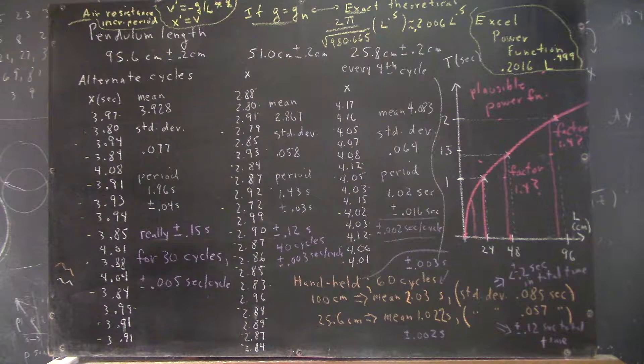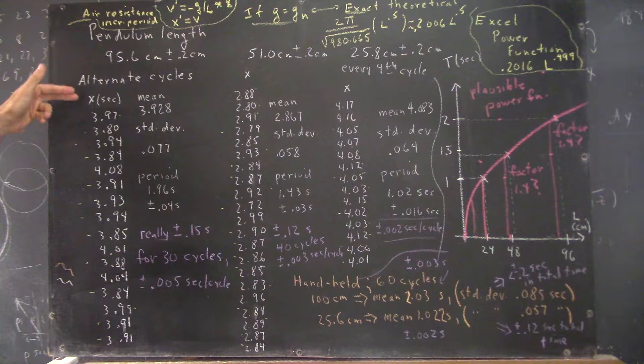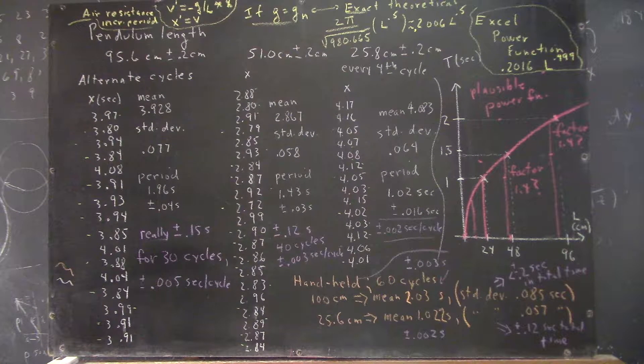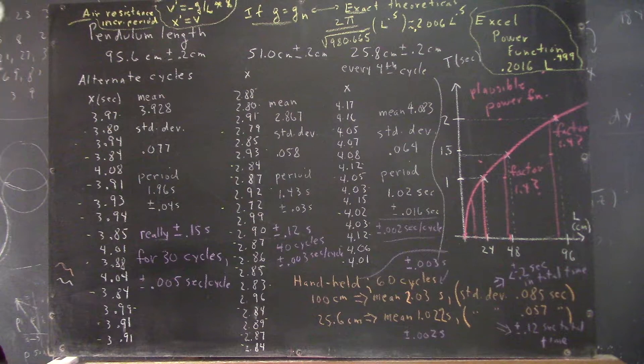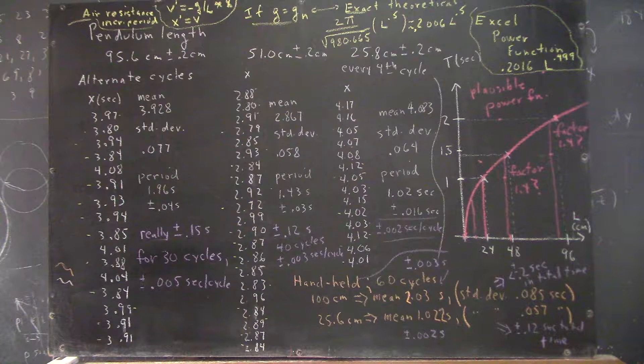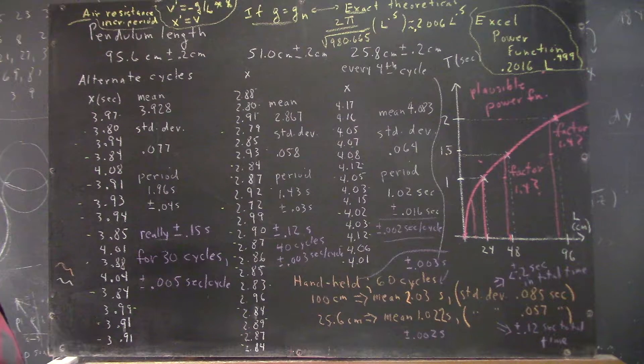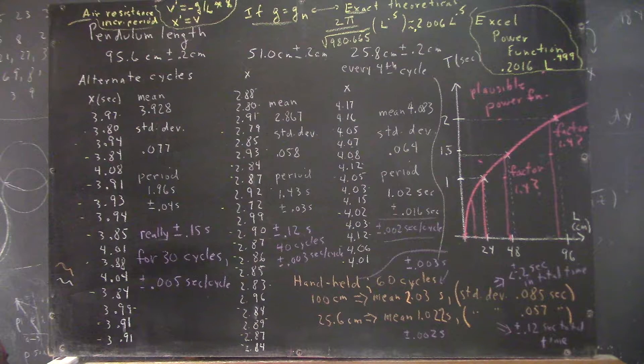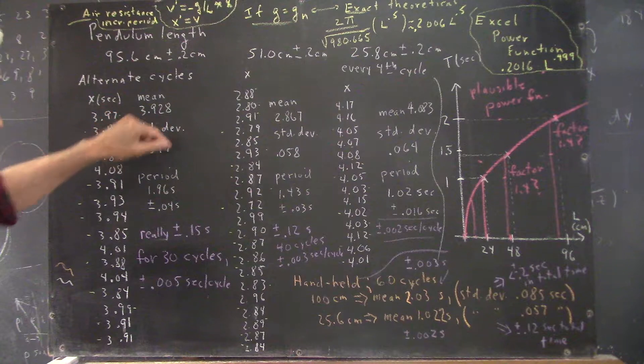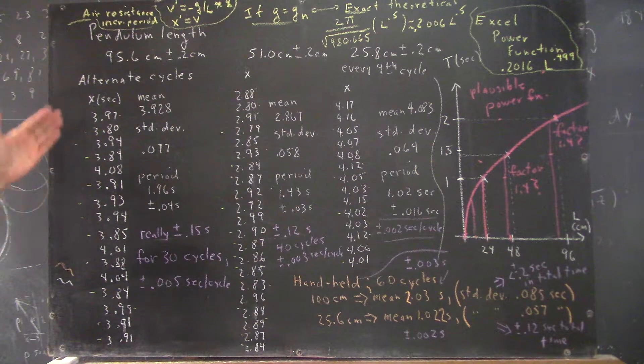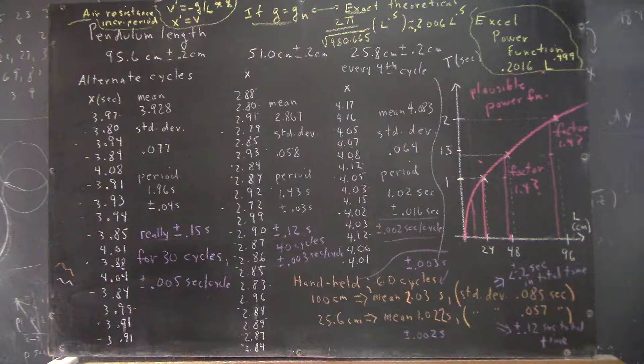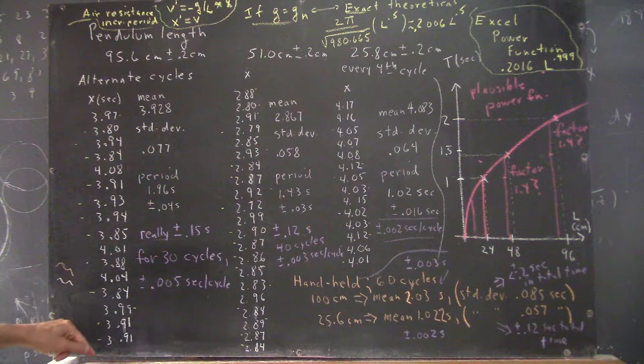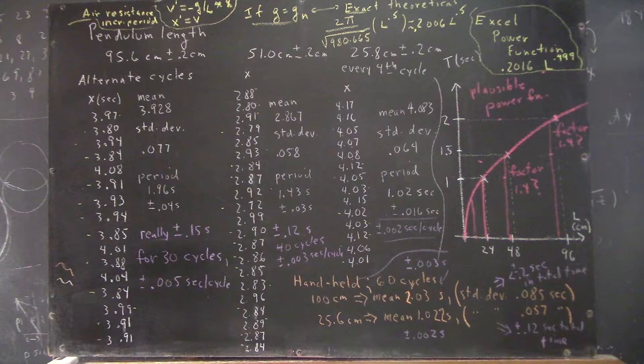And the total uncertainty in the total of these times is on the order of a standard deviation or two, so really, we expect that our standard deviation being 0.077 seconds for the alternate cycles. It's unlikely that our total is off by more than about twice that standard deviation.